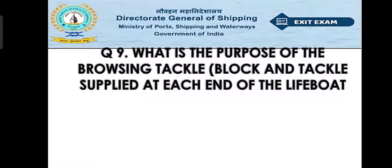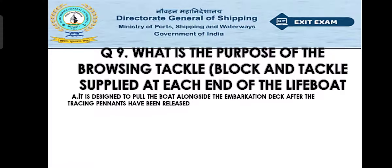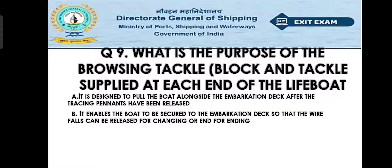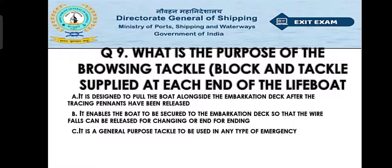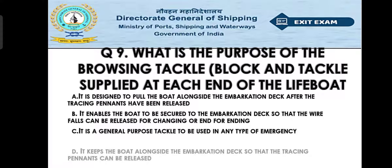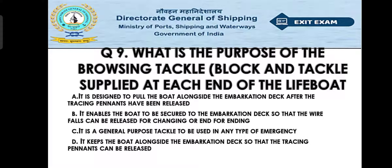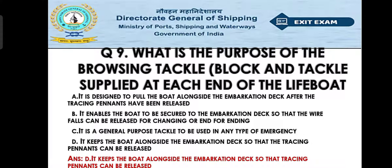Question number nine: What is the purpose of the bowsing tackle, block and tackle, supplied at each end of the lifeboat? Option A: Pull the boat alongside the embarkation deck after the tricing pennants have been released. Option B: Secure the boat to the embarkation deck so the wire falls can be released for changing. Option C: A general purpose tackle for any emergency. Option D: Keeps the boat alongside the embarkation deck so that the tricing pennants can be released. The right answer is Option D.